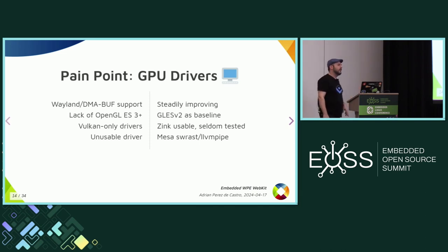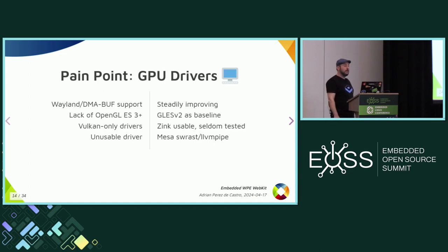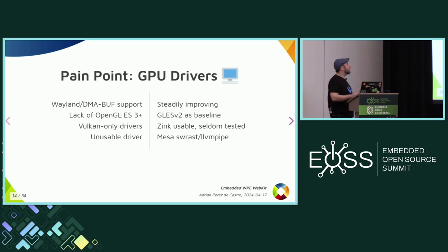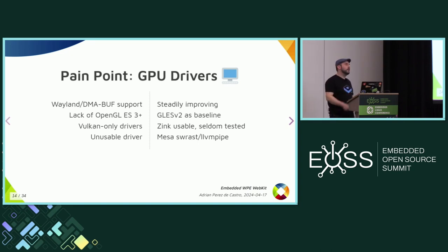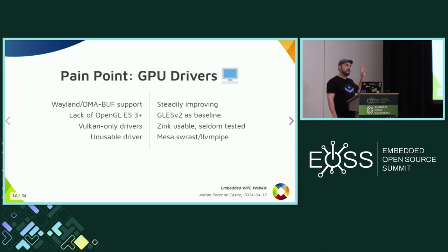The worst case is when there's no driver or the driver is basically impossible to use. In some cases we've used Mesa's software rasterizer — that's not an option I would recommend at all, as it does all rendering in the CPU. If your display is very small — hundreds of pixels by hundreds of pixels — a modern CPU can keep up with 60 fps. So if you have a very small screen and no possibility of adding a GPU, it may be an option, but it shouldn't be your first option.